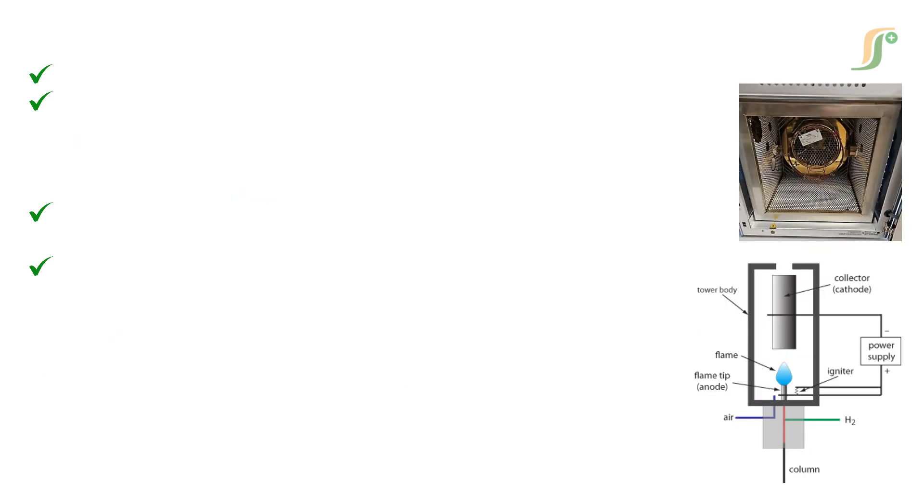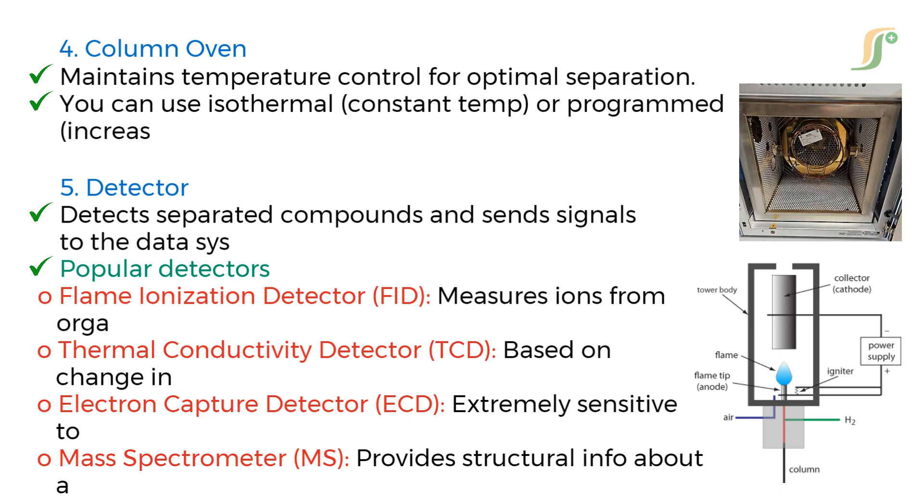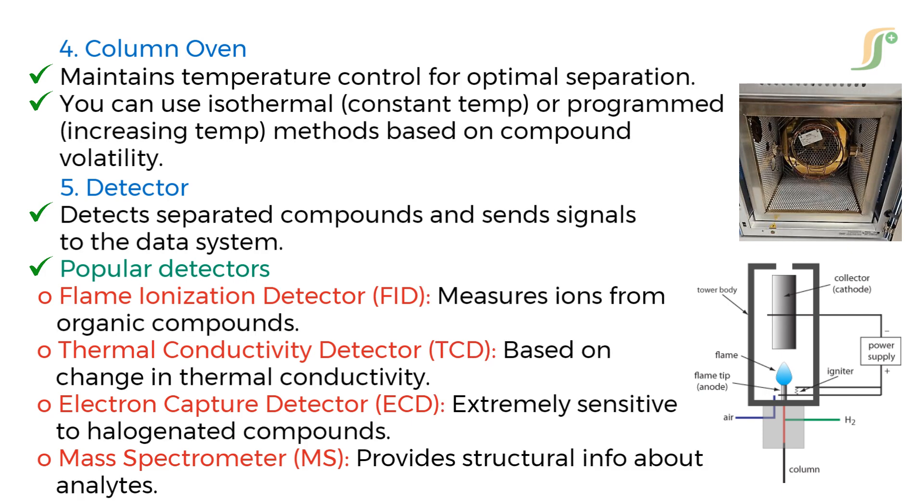Fourth component is column oven. It maintains temperature control for optimal separation. You can use isothermal for constant temperature or programmed increasing temperature methods based on compound volatility.